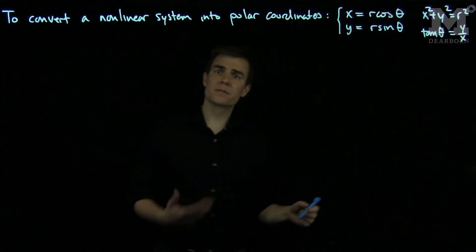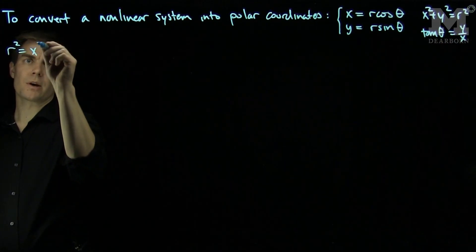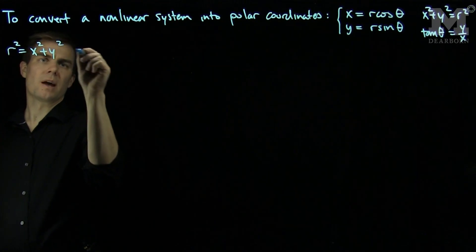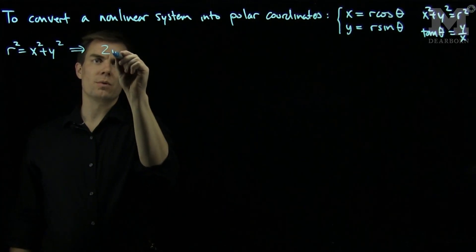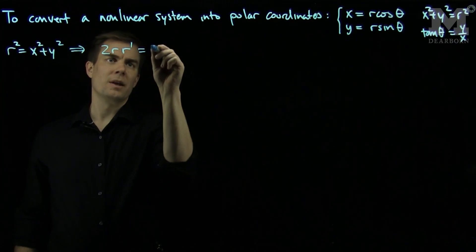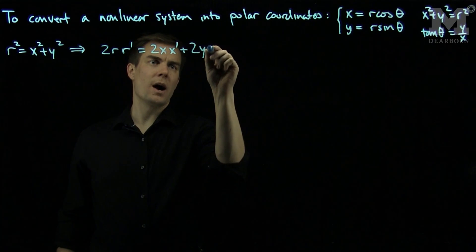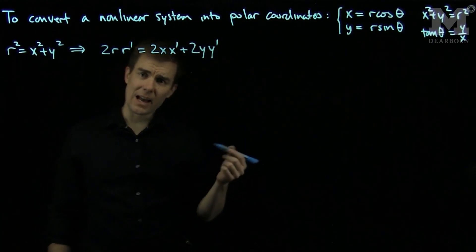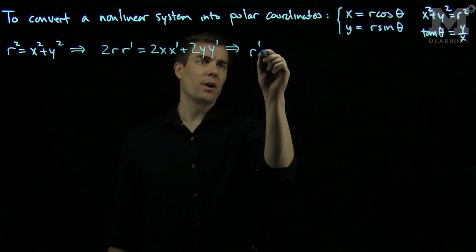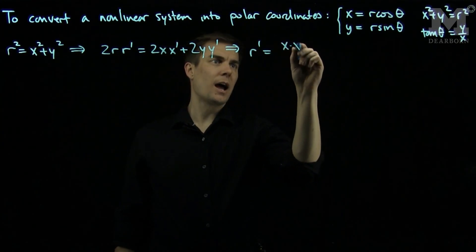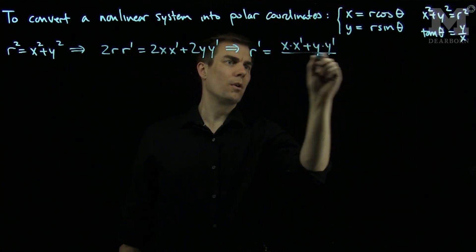Now let's find the differentials of these functions. From r squared being equal to x squared plus y squared, I can take the time derivative and conclude that 2r r prime is 2x x prime plus 2y y prime. Canceling the 2 and dividing by r, I can conclude that r prime is equal to x x prime plus y y prime over r.